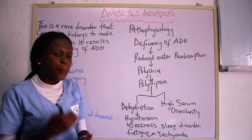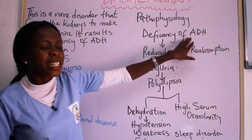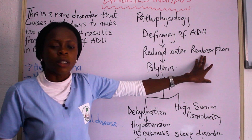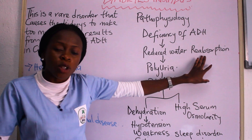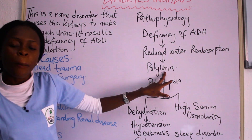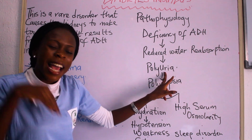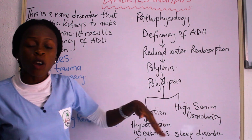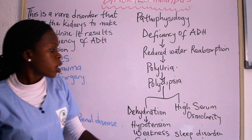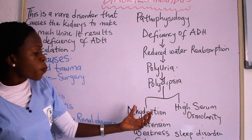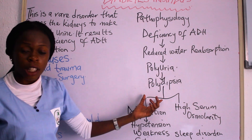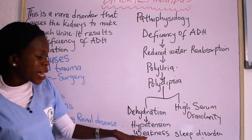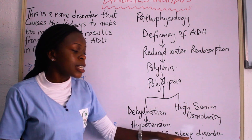What is happening in diabetes insipidus is that there is deficiency of anti-diuretic hormone. This deficiency leads to reduced water reabsorption, which leads to excess urine — polyuria. When you are passing out excessive urine, there is going to be polydipsia, which is increased thirst. Both polyuria and polydipsia are also present in diabetes mellitus. As a result of polyuria and polydipsia, there will be dehydration. This dehydration will lead to hypotension, weakness, fatigue, tachycardia, and sleep disorder.